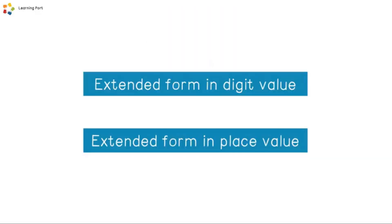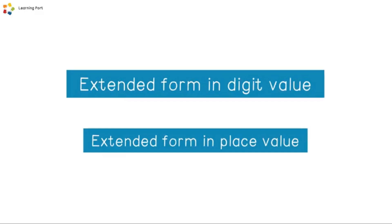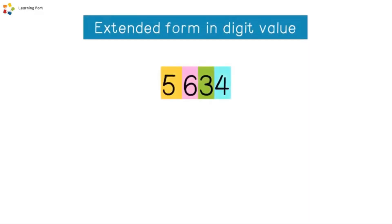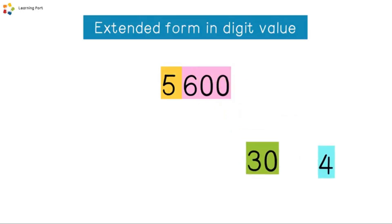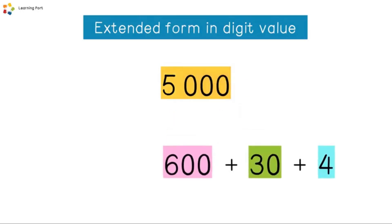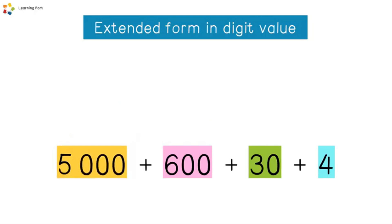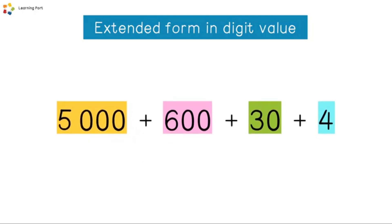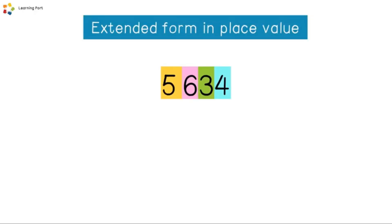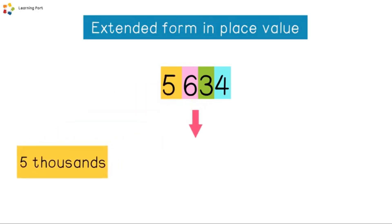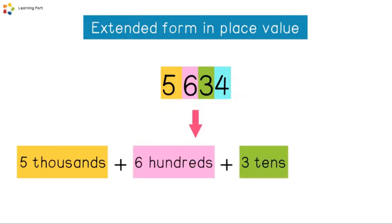Let's look at the extended form of the place value and digit value. Five thousand six hundred and thirty-four has four ones, three tens, six hundreds, and five thousands. Five thousand six hundred thirty-four equals five thousands plus six hundreds plus three tens plus four ones.